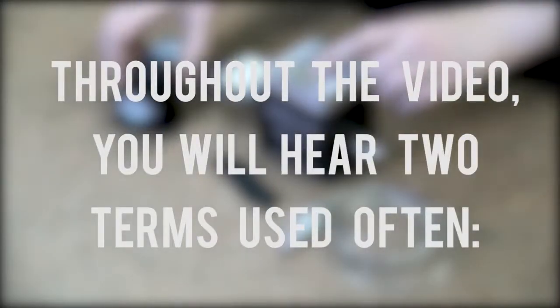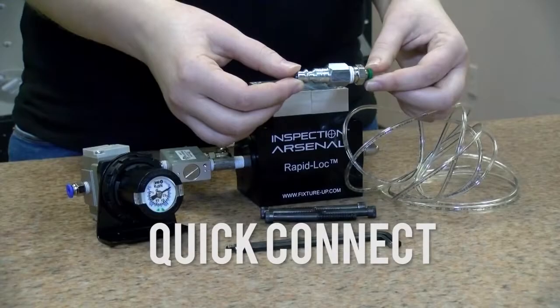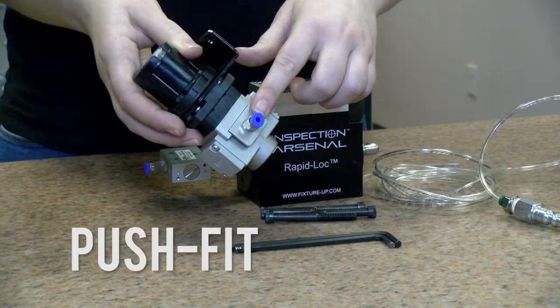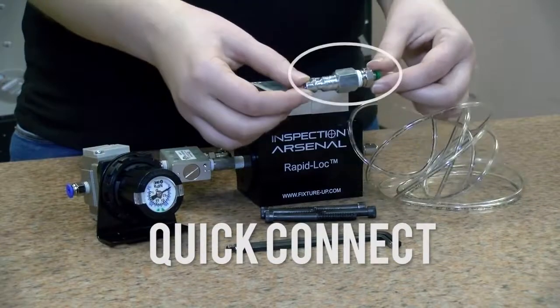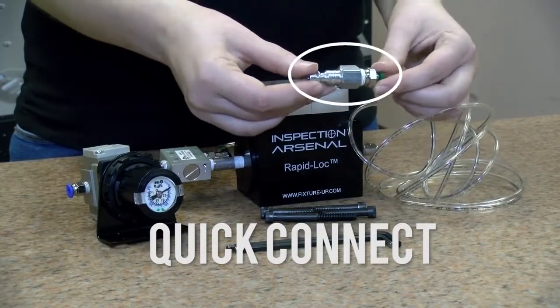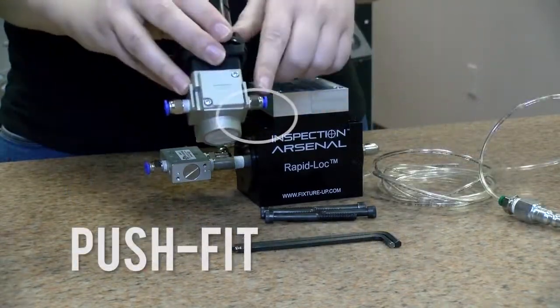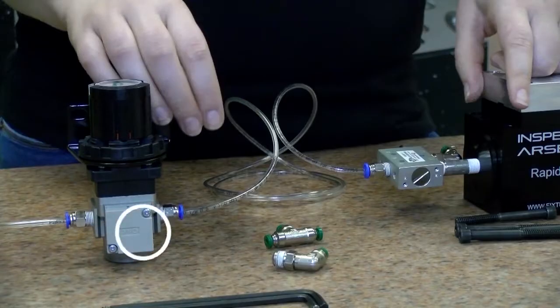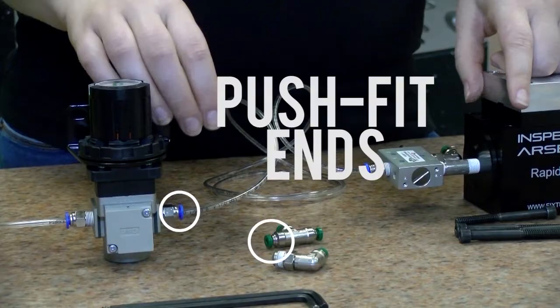Throughout the video, you will hear two terms used often, quick connect and push fit. The quick connect is for the air hose fitting that allows air to pass through the system. The push fit is short for push fitting, which is the type of connection used to hold the tube in place. All of the fittings with blue and green ends have push fit ends.